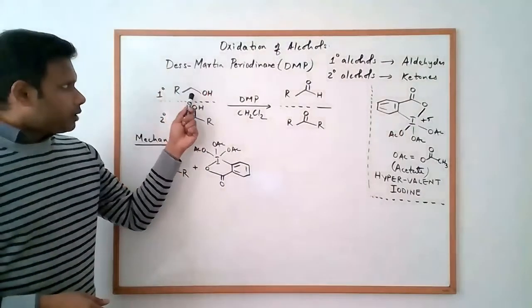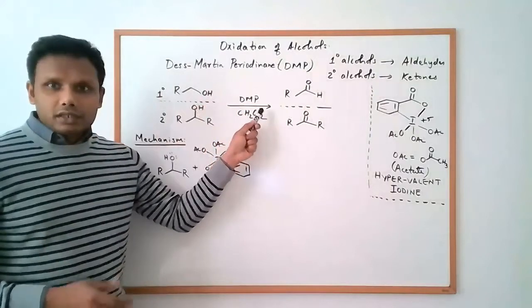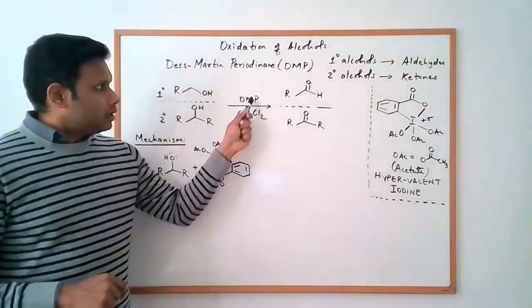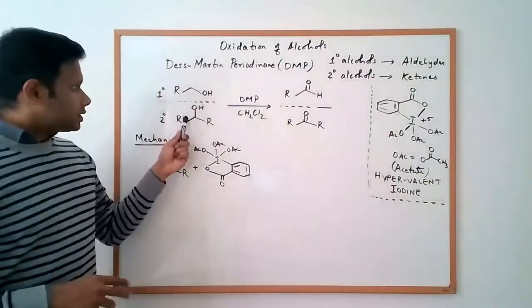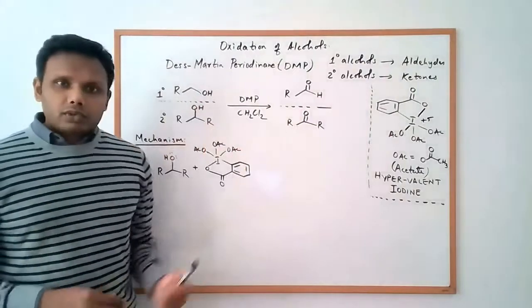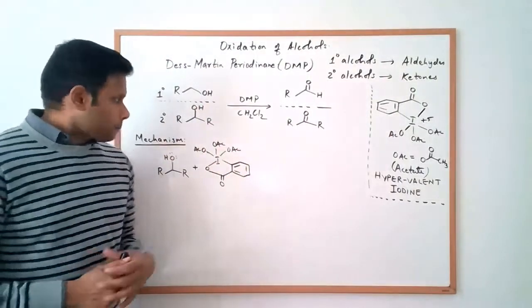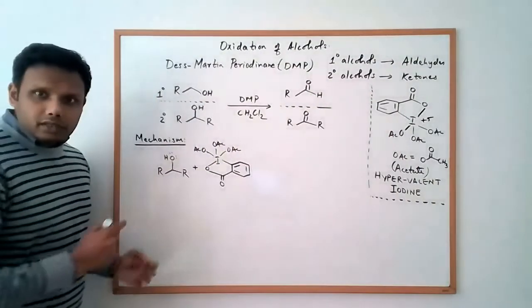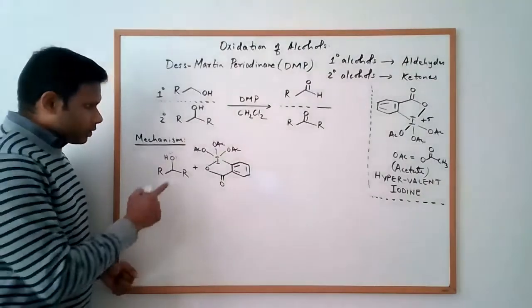So if a primary alcohol is treated with DMP and the reaction is typically done in dichloromethane, the primary alcohol is converted into the aldehyde. Secondary alcohols are converted into ketones under similar conditions. Let's look at the mechanism of this reaction, how this works. So if we use a secondary alcohol to look at this mechanism,